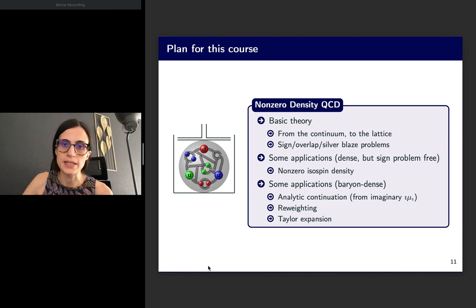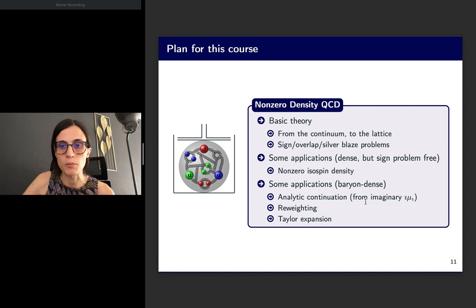Afterwards, we will move on to the non-zero density part of the course. Also in that case, there will be some introduction of the basic theory, and some applications will be discussed in setups which are either dense but sign problem-free, such as the non-zero isospin density setup I have already mentioned, or setups which are baryon dense. In that case, they can also be sign problem-free if you, for example, consider imaginary values of the chemical potential, as you do as a starting point for an analytic continuation. And then more techniques which are meant to circumvent the sign problem, which are in particular reweighting and Taylor expansion.